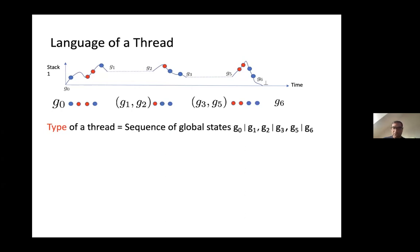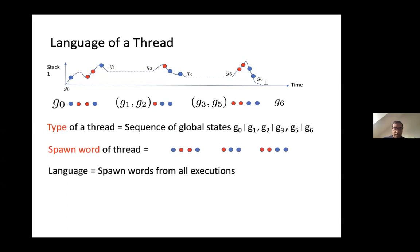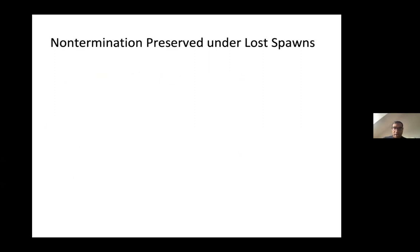This spawn language is in fact a context-free language, because we are considering a single thread, which is just a pushdown. For every type, you can produce a pushdown automaton describing all possible spawn words, giving a context-free language.